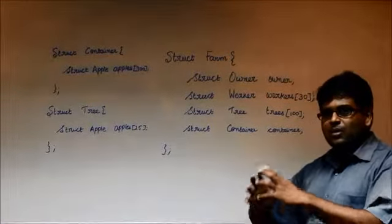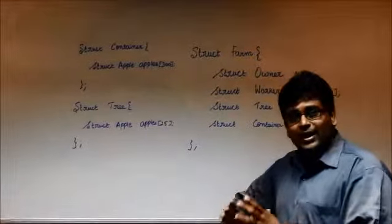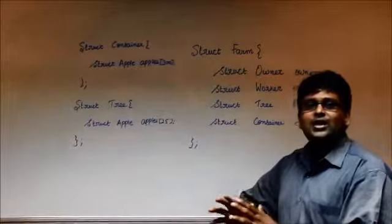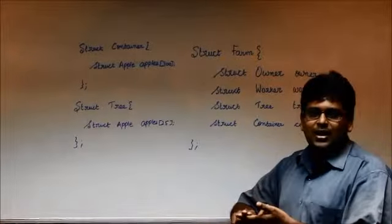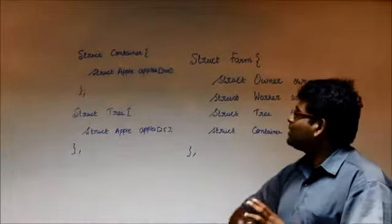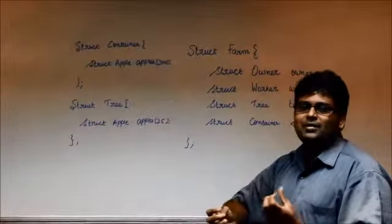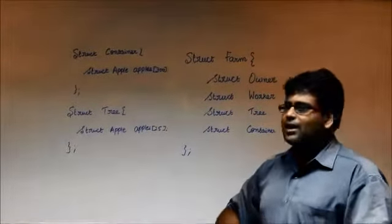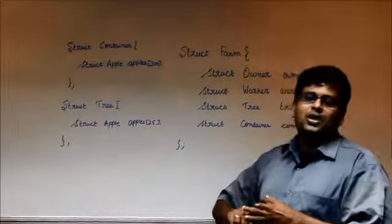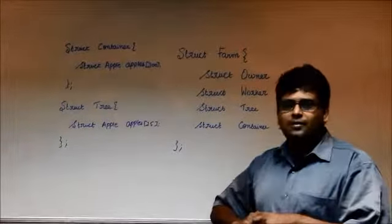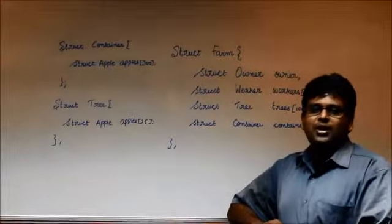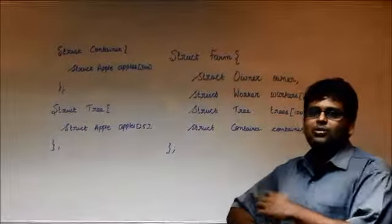Similarly, we will have another set of workers who will get the apple from the container and package it. They will take rest if the container is empty. These two conditions have to be met. The common container acts as a common place for storing the apples. We will terminate the program when there are no more apples in the tree and when there are no more apples in the container. With this detail, I am sure that you will be able to write your own program to solve this puzzle.